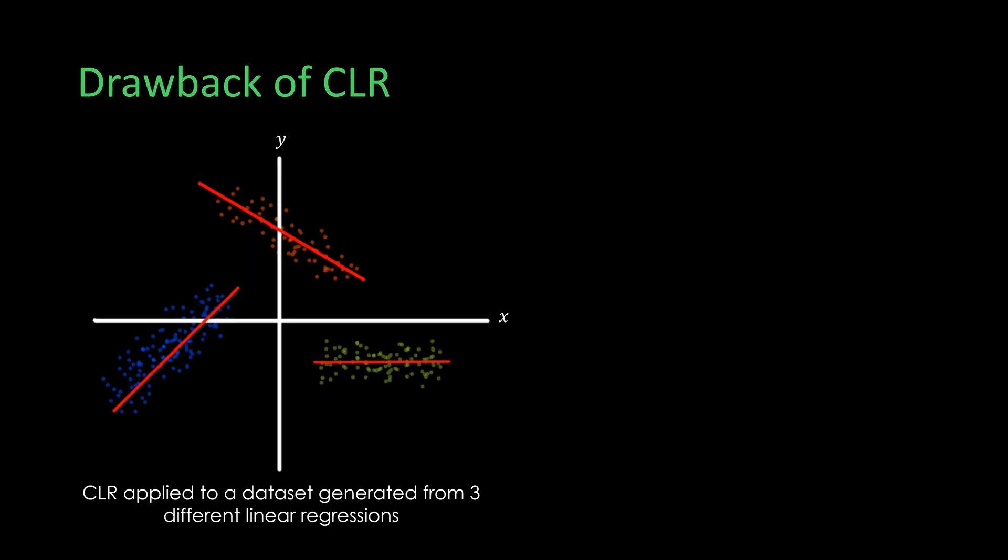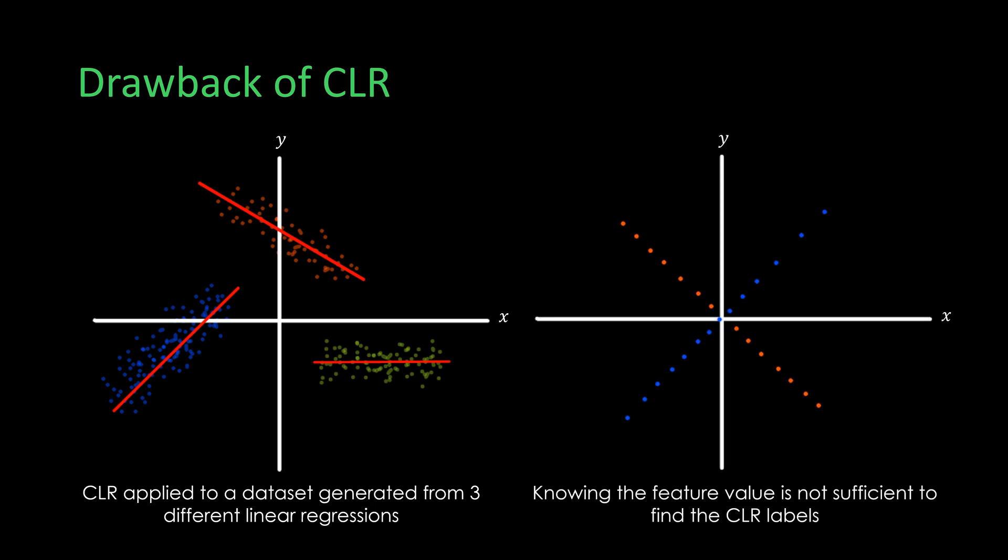The figure on the left shows CLR applied to a dataset generated from three different linear regression models. Looking at the figure on the right, what if the target labels are hidden and each data point with feature x has different score values belonging to different classes? Then, there is no easy way to assign CLR labels to the incoming test point because CLR clusters are based on the correlation between x and y, which is not available for test points. Thus, two approaches can be found in literature to solve this labeling problem.